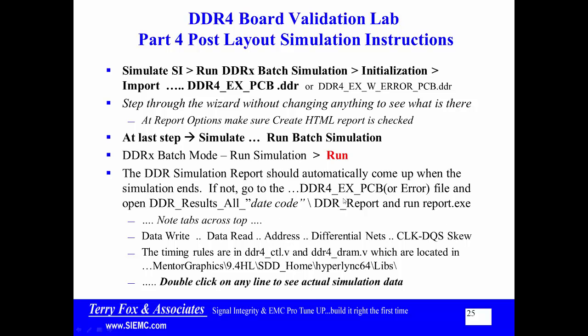If you're using the error version, you'll find that Address A9 has some problems. When you click on the Address tab, there's a place where you can select Pass/Fail for sorting. Click on Fail and you'll see items in red. For example, you'll see that the setup time has failed. You'll need to look at the DDR4 DRAM file, because that's where the timing is for writing to the DRAM — it exists within the Mentor Graphics 9.4 SDD Home HyperLynx Labs.